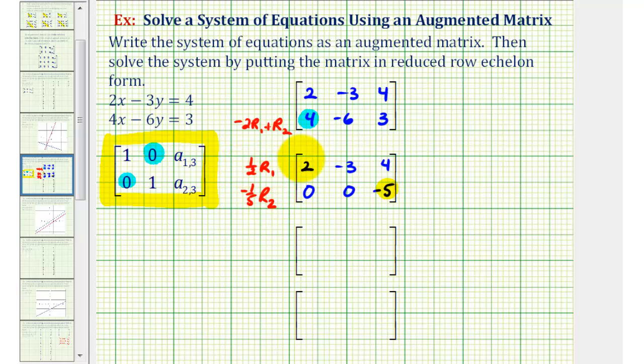So now for row one, we'll have one-half times two, that's one. One-half times negative three, that's negative three-halves. One-half times four is positive two. And then negative one-fifth times zero is still zero. And negative one-fifth times negative five is positive one.